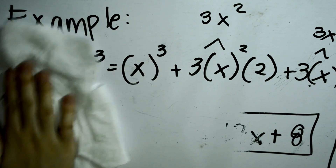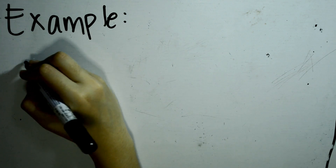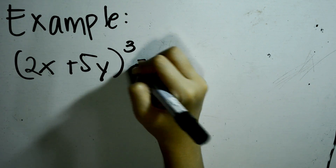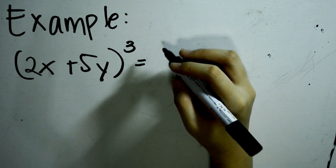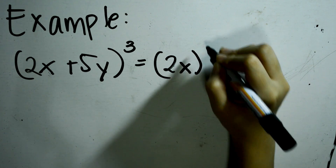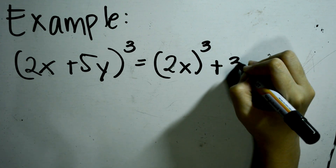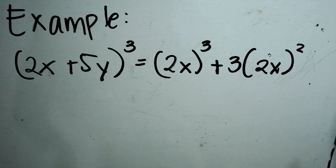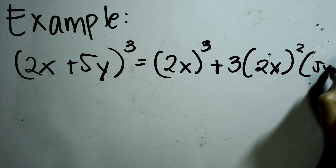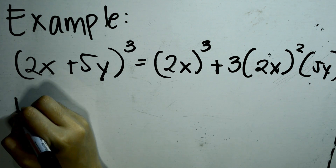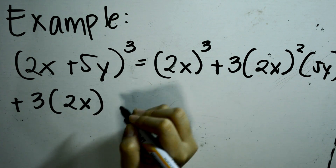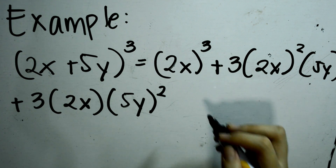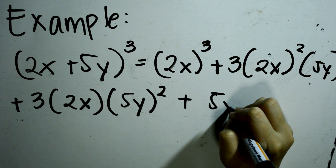So, another example. Again, first, we are going to cube the first term: 2x cubed. Then, add 3 times the square of the first term, 2x squared, times the second term, y. Then, add 3 times the first term times the square of the second term. Then, lastly, add the cube of the last term.